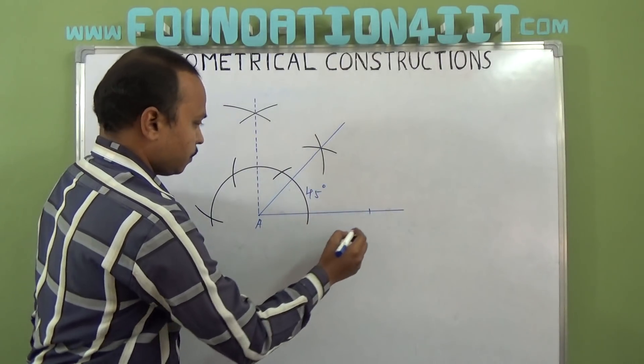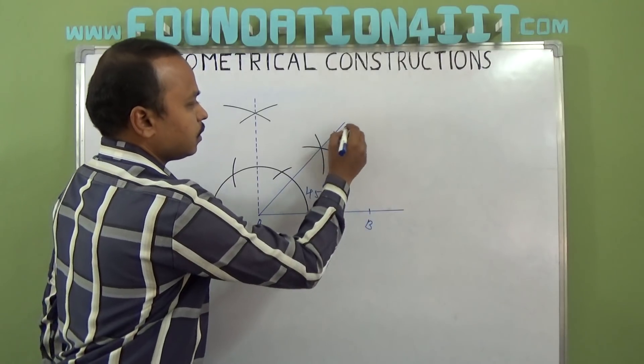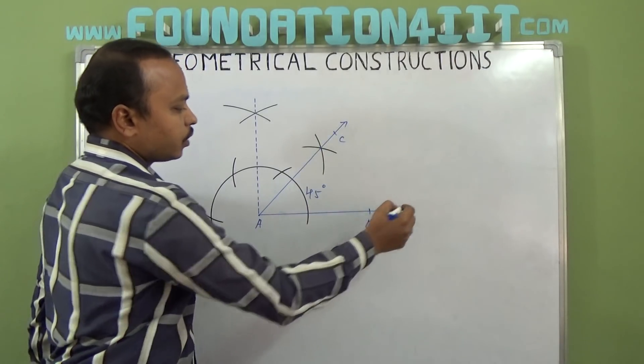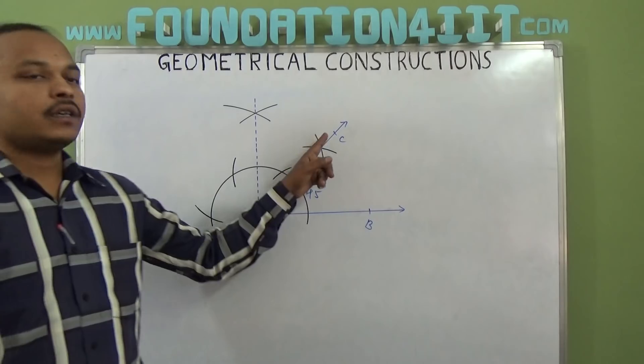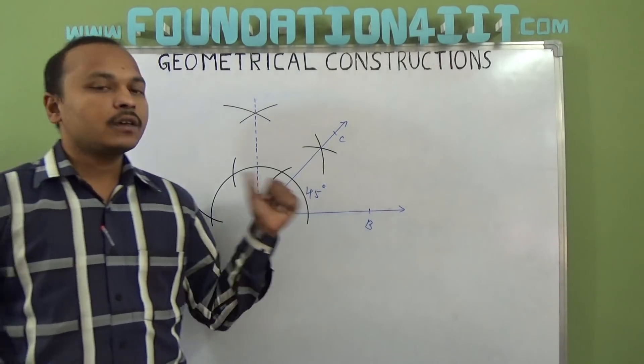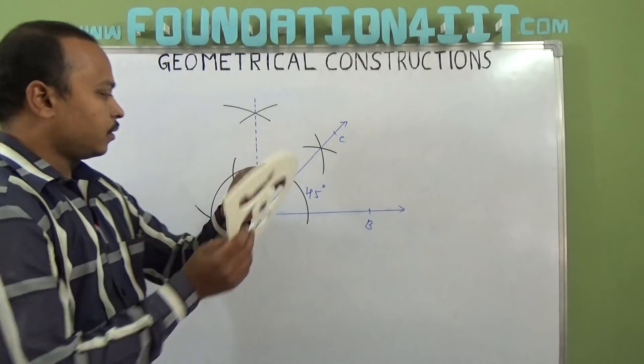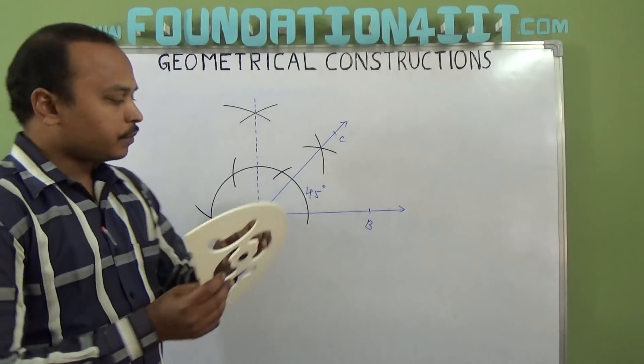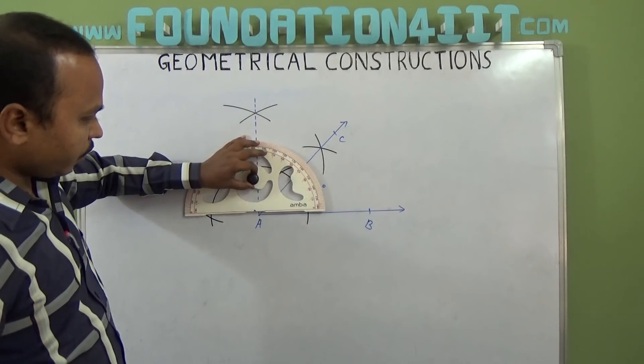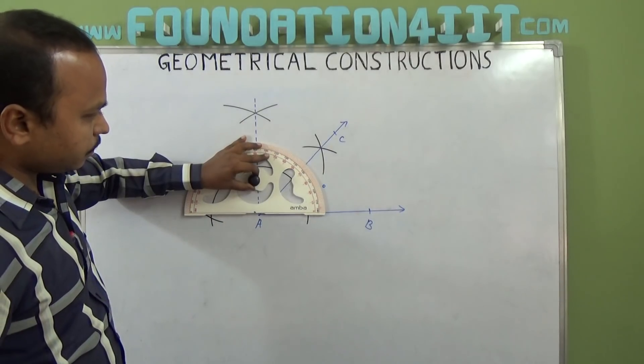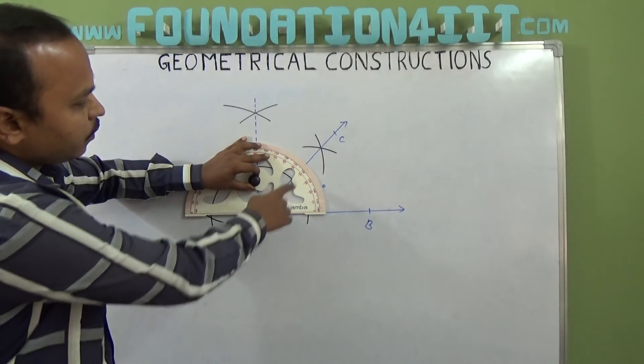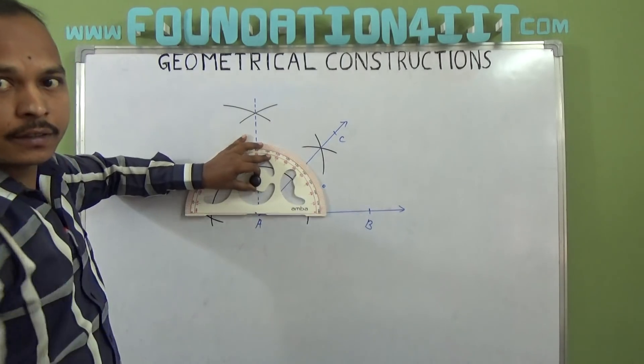If you name these points B and C, angle BAC or angle CAB is 45 degrees. Without protractor we are done, but I'm just verifying with the protractor whether it is 45 degrees or not. Exactly—it's between 40 and 50—45 degrees.